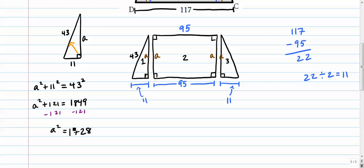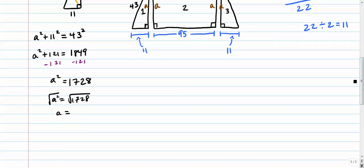And from there, we want to get rid of the little square. So we take the square root of both sides. So the square root of a squared is just a. And next is the square root of 1728.